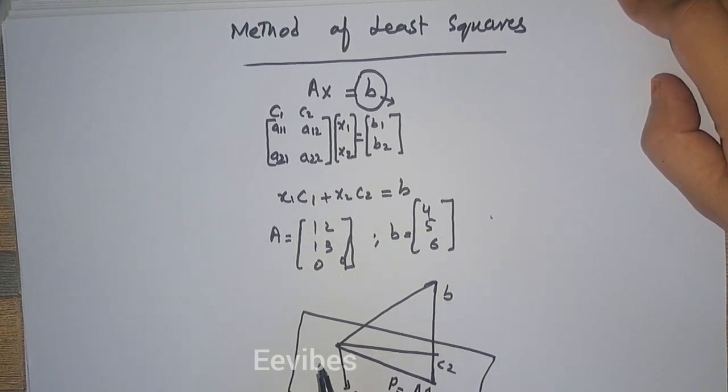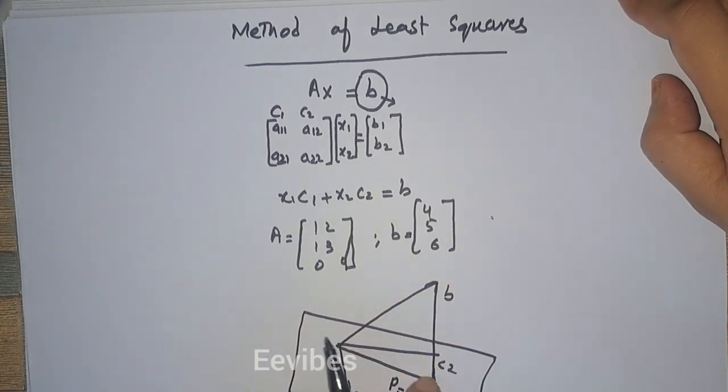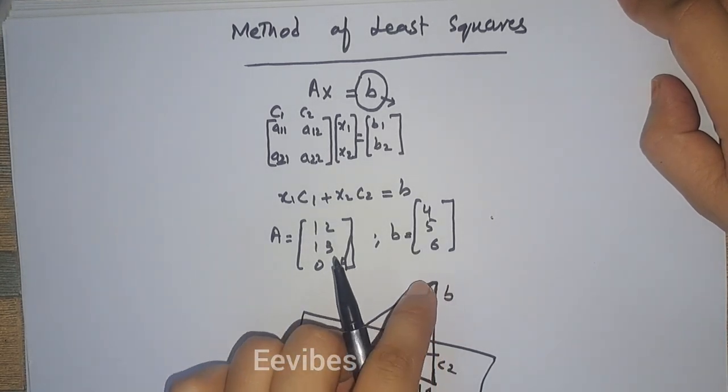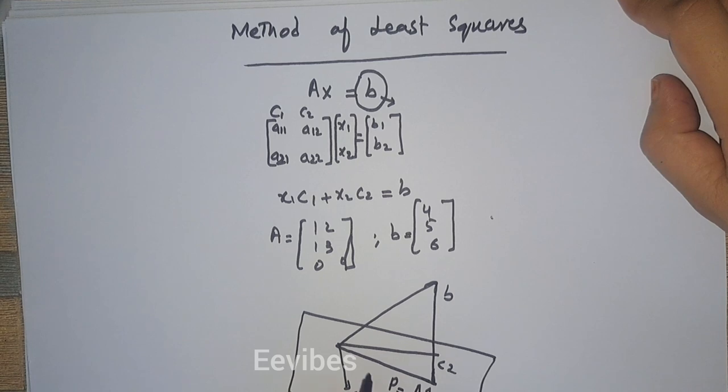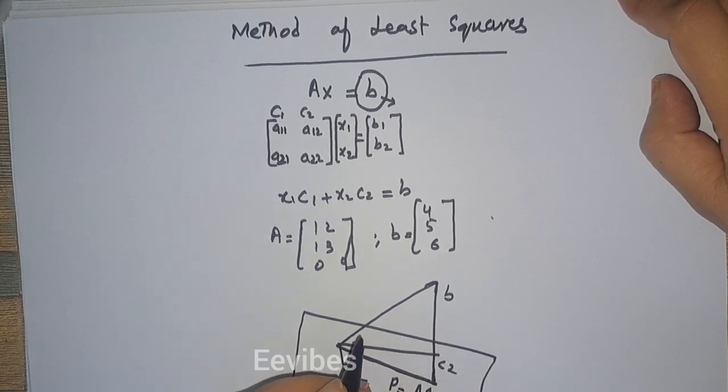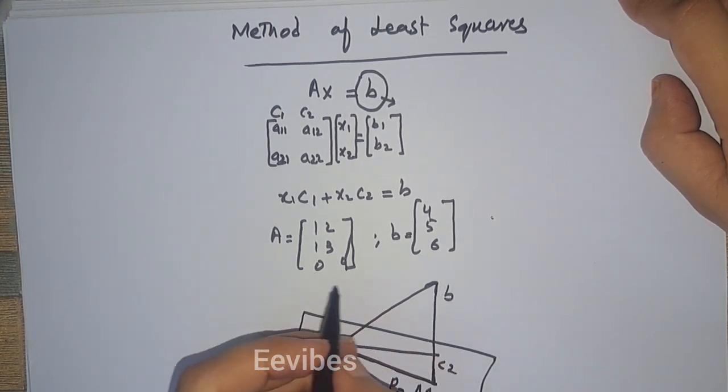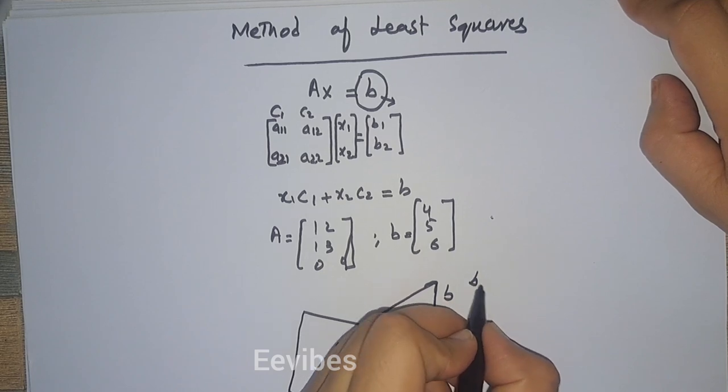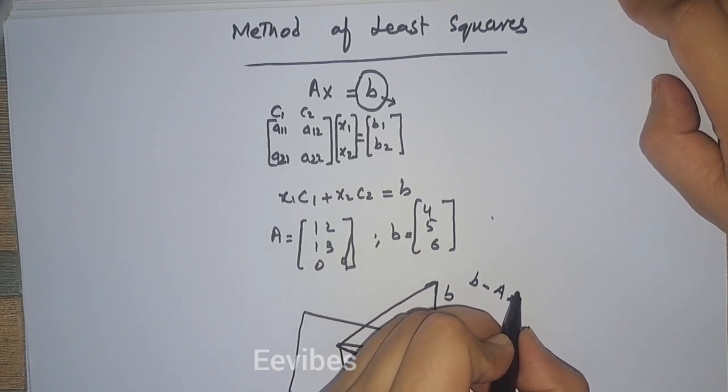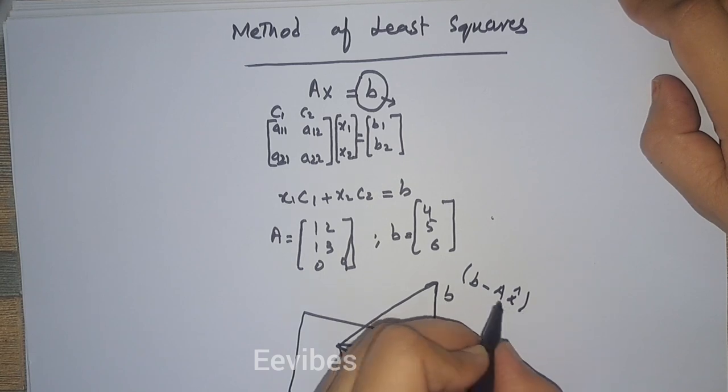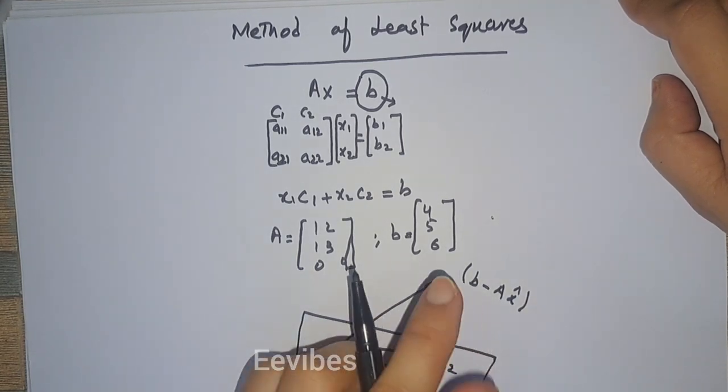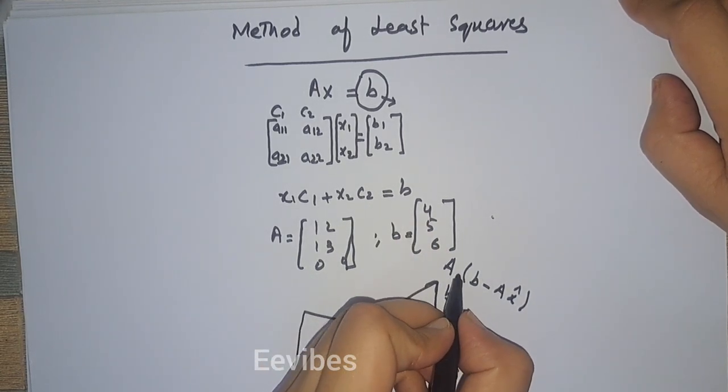And then what we do? Since if we subtract this projection from the vector B, what we are going to get is B minus AX̂, which will be a vector that will be perpendicular to the column space of A now.